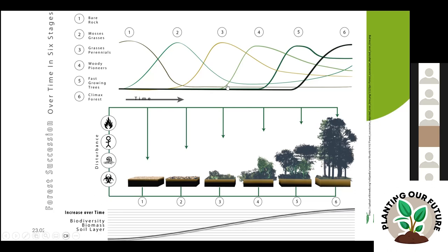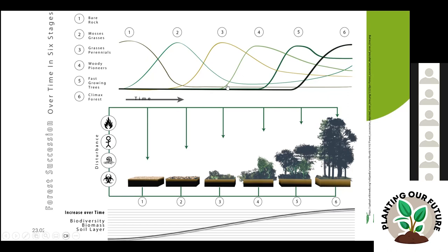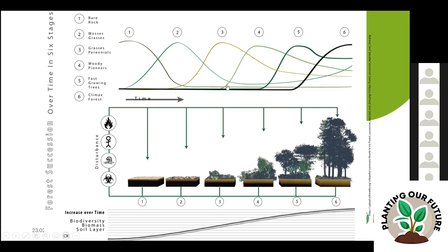The cycle continues until we have fast-growing pioneer trees and eventually climax species. In this figure you can see the succession: bare land — which may come from human impact, a major fire, or any major disturbance — then the cycle of grasses, herbs, perennial herbs, shrubs, pioneer species, and eventually climax species, which form the climax forest.